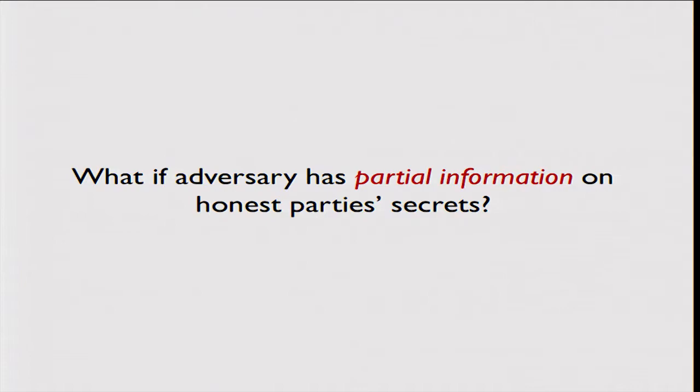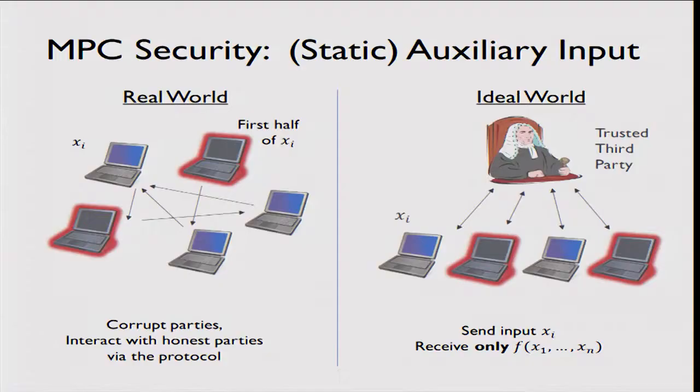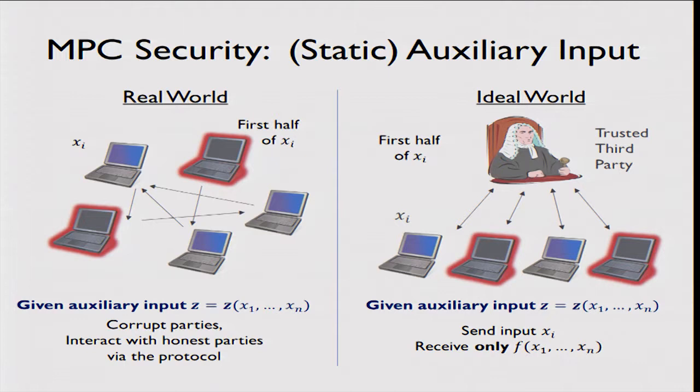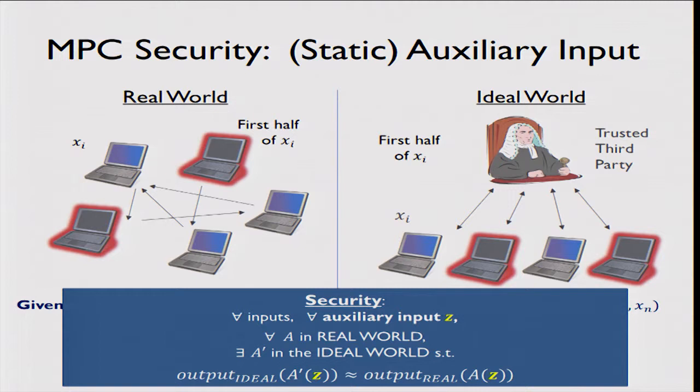What happens if the adversary has partial information on the secret inputs? This question came up back in the 80s when multiparty computation was first developed. Suppose somebody enters a protocol knowing the first half of one of the secret inputs — we want to make sure that running the protocol doesn't unlock the rest of that input. This is formalized by saying that for any auxiliary input given to the adversary — some partial information on the parties' inputs — the simulator will need this to simulate, but this doesn't reveal any more information.